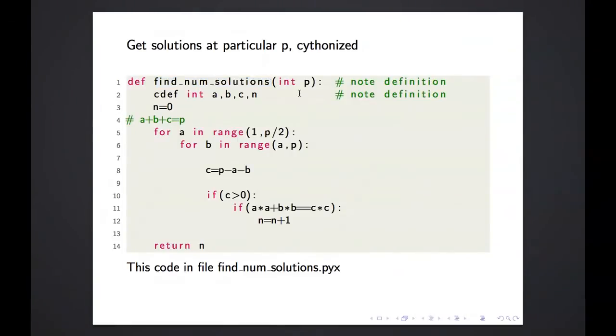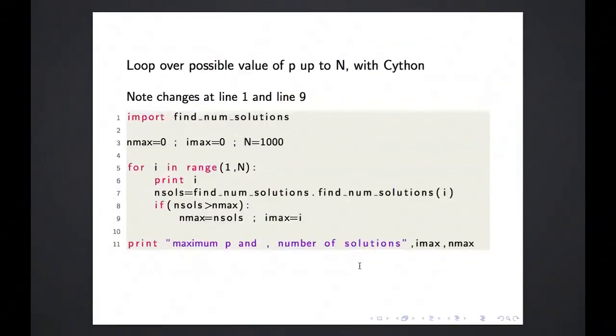So I take this code with these modifications and I put it in file findNumSolutions.pyx. And now this is my main code. The code which loops over findNumSolutions, and here the differences are really minor. I have to import the findNumSolutions module to get this function, but it's just a standard import, just like you would import any other Python module. And then when I call it, I have to just have findNumSolutions - this is the name of the module and then this is the name of the function. But other than that, the main code hasn't really changed much. So once I compile this Cython module, I can just use it as I would use any other Python module.